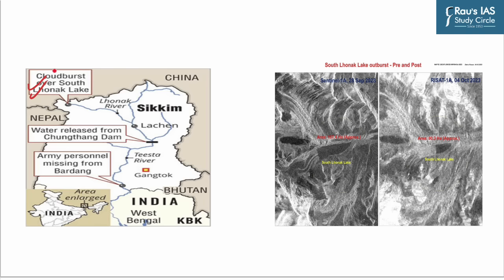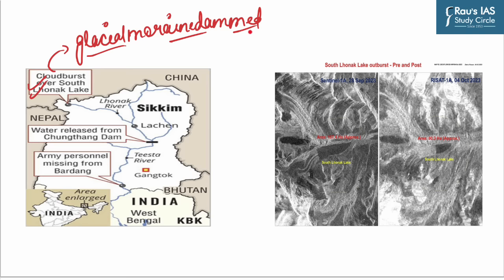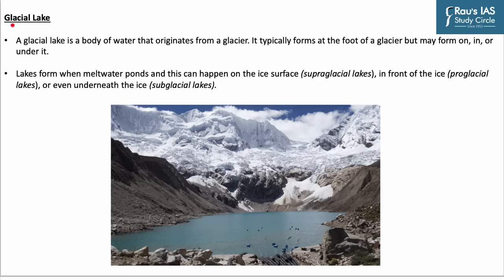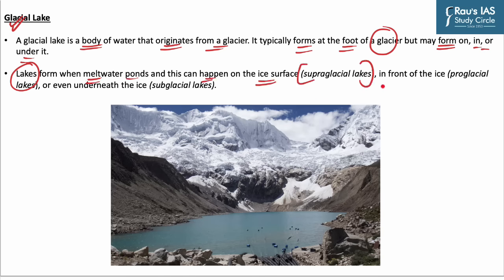The South Lhonak Lake is a glacial moraine-dammed lake located in Sikkim's far north-western region. It is one of the fastest expanding lakes in the Sikkim Himalayan region. ISRO has released pre- and post-disaster scenario imagery. A glacial lake is a body of water that originates from a glacier, typically forming at the foot of a glacier but may also form on, in, or under it. Lakes form when meltwater ponds — on the ice surface (supraglacial lakes), in front of the ice (proglacial lakes), or underneath the ice (subglacial lakes).